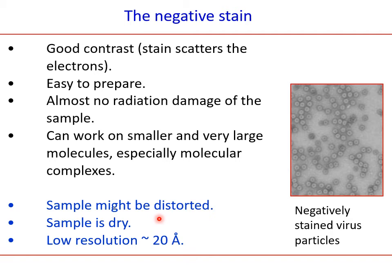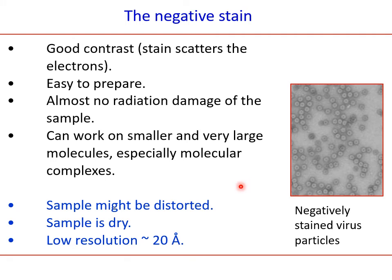In addition to drying, the specimen is exposed to vacuum conditions. When a sample lacking water is placed in vacuum, what is called a flattening effect occurs. For example, like a football with all the air removed placed in a vacuum chamber — it just becomes flattened. Similarly, a virus particle of spherical nature may lose its spherical shape and show a flattening effect, contributing further to a non-physiologically relevant structure.